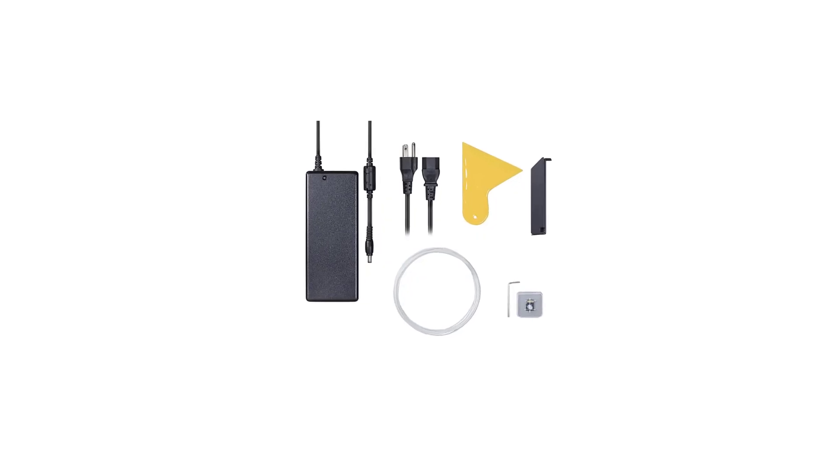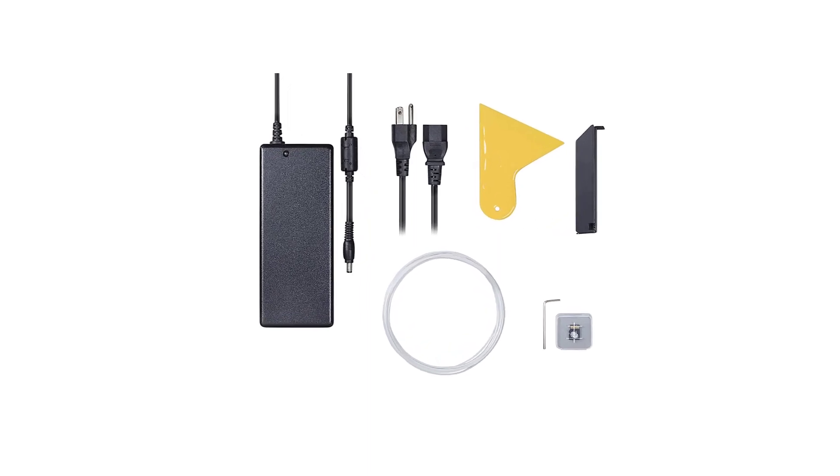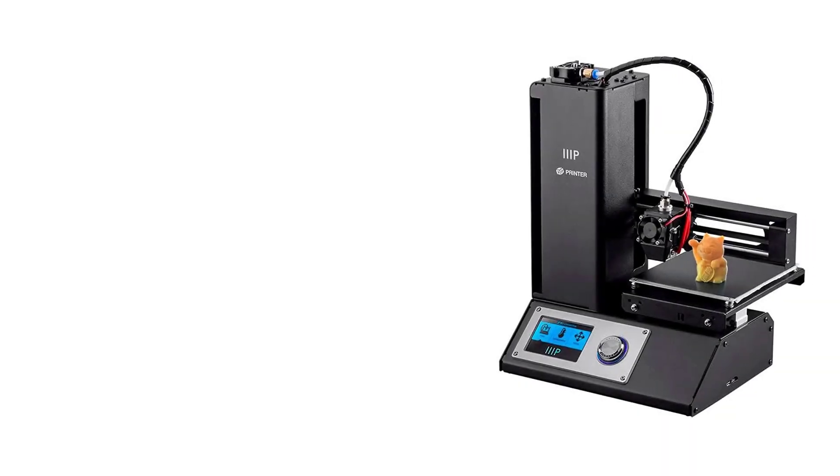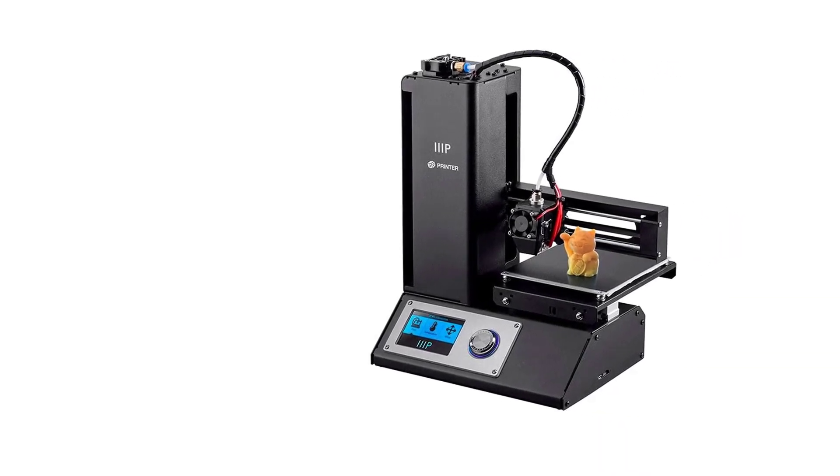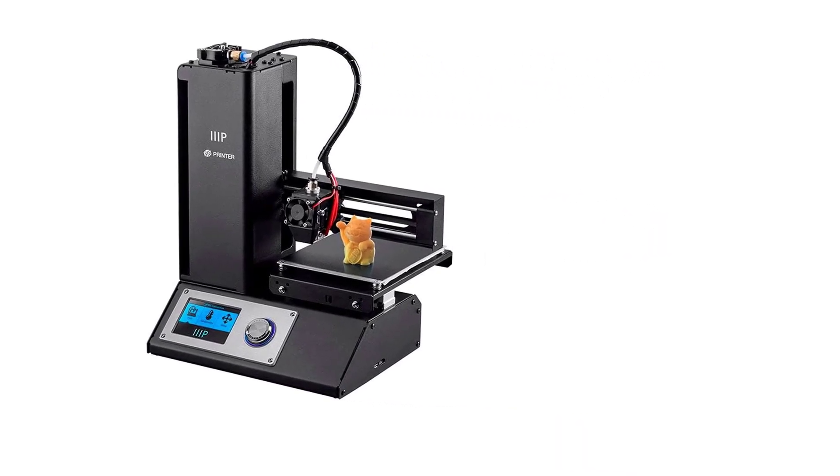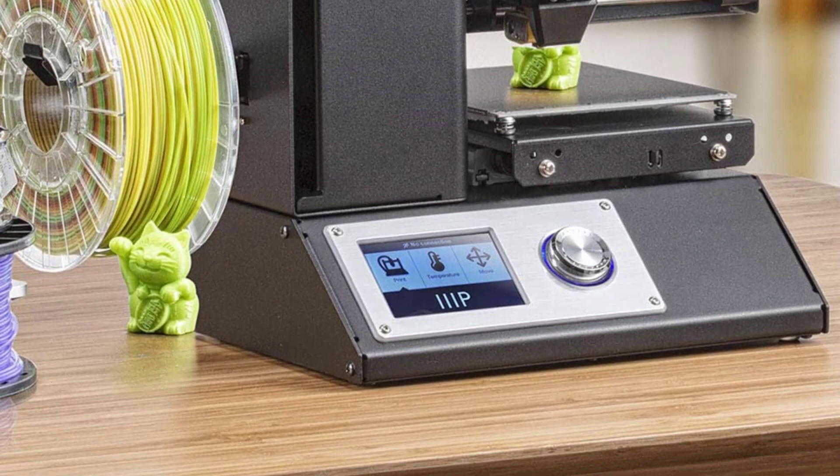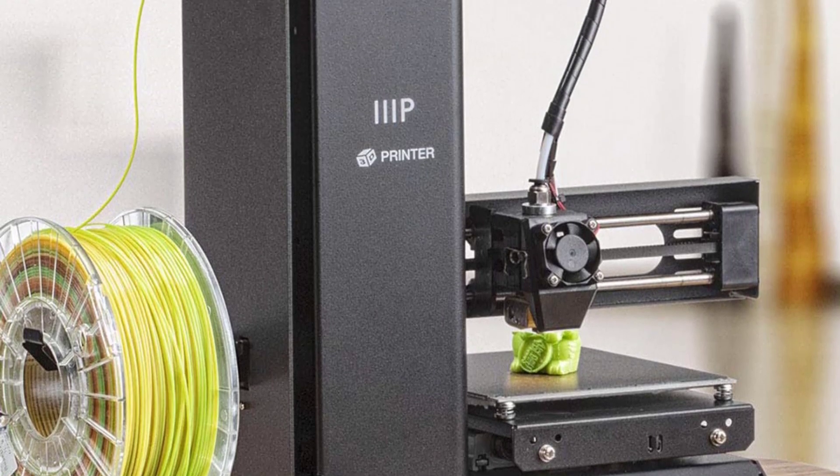The Monoprice Select Mini V2 is our top pick because of its standout features and specs. Essentially, the printer has the original V2 features but with a few enhancements. Some of the improvements include an all-metal hot end that improves heating and prevents clogging and a heated printing bed that enhances print adhesion and prevents warping.